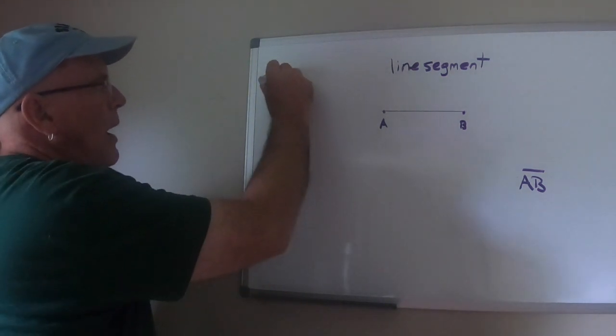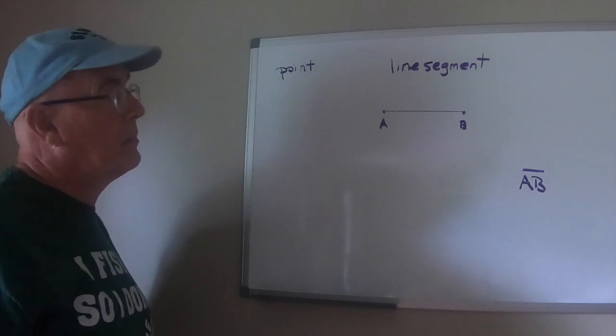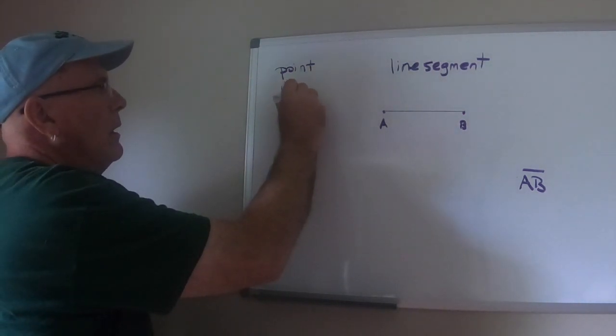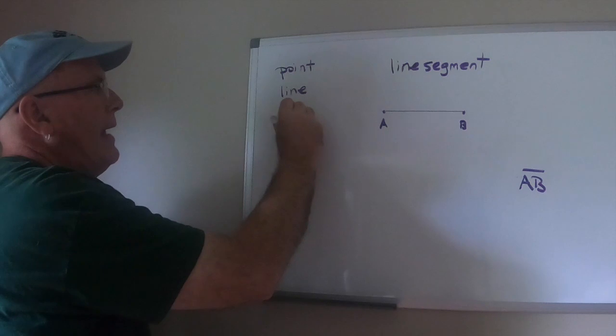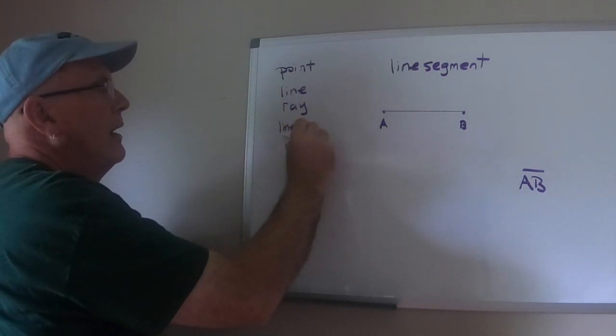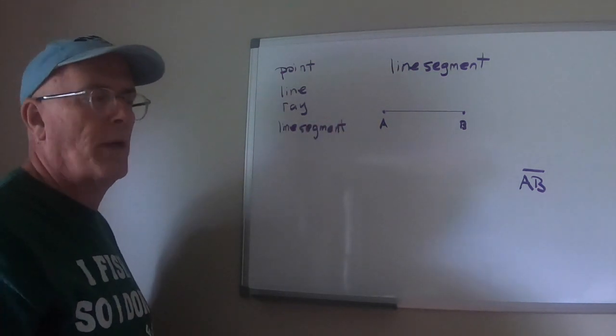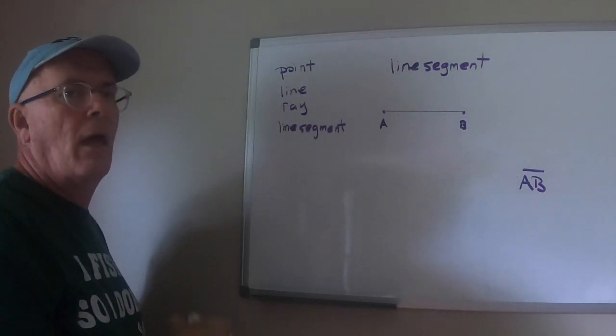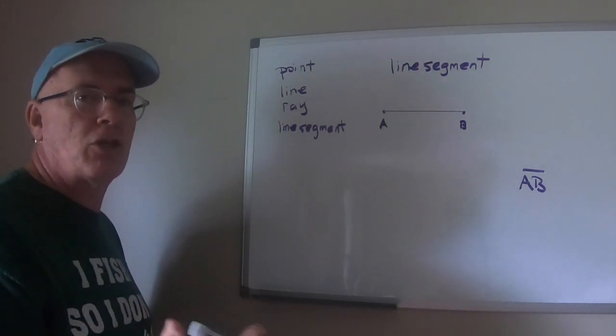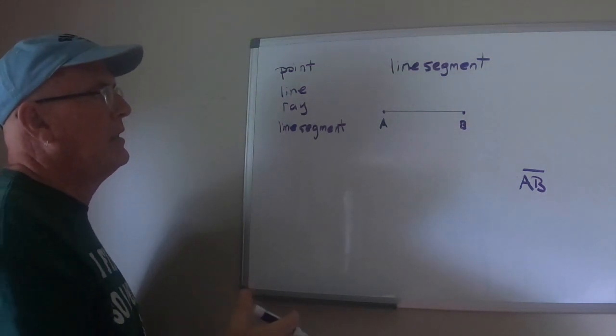So far we have talked about a point which is not a dot, it's a point, a line, a ray and a line segment. It is very important that you can identify the differences between these things that you have this terminology. We're going to get into angles.